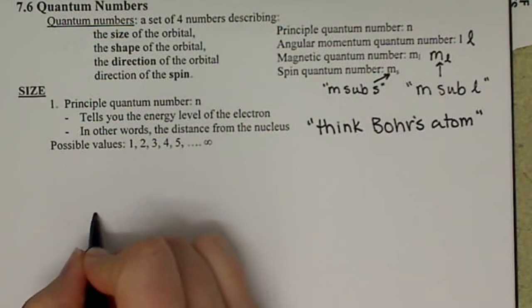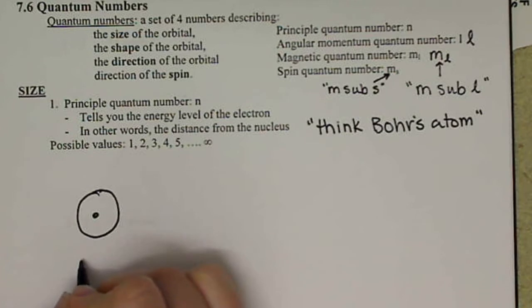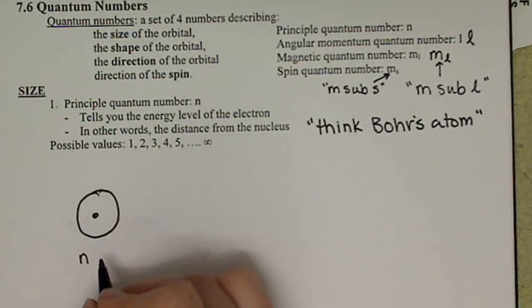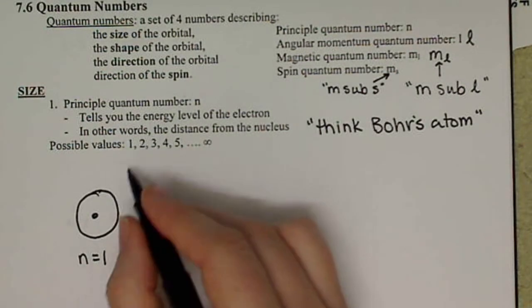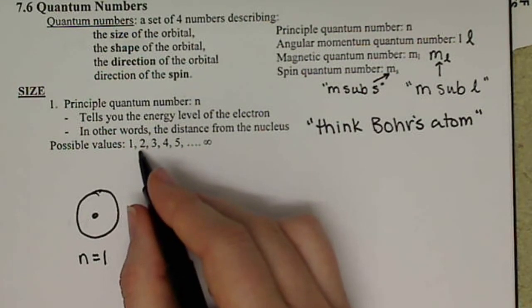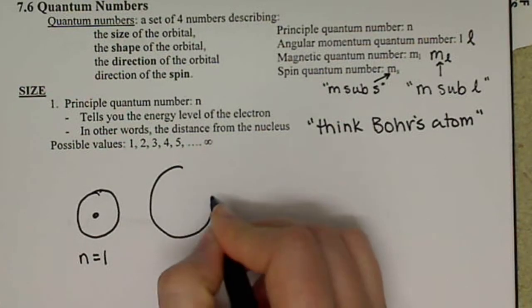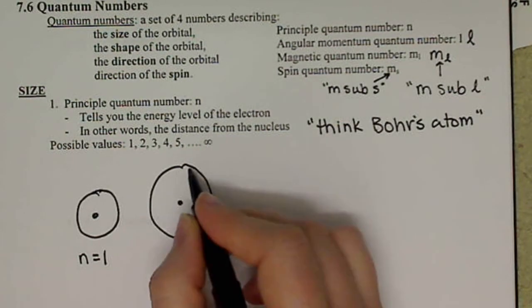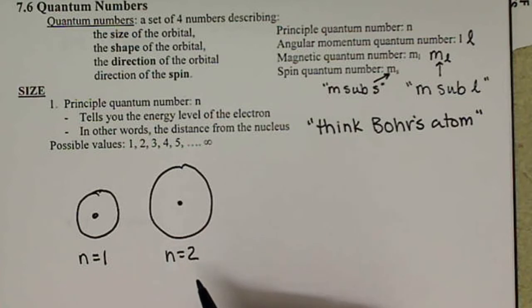So when we have n equals 1, essentially you can kind of think of it as a ring. We'll learn more of this concept in the next quantum number, but essentially this would be n equals 1. n equals 2 is a bigger number, so it's going to be further away from the nucleus, which means that any electron in the n equals 2 level, because it's further away from the nucleus, is going to have a higher energy.